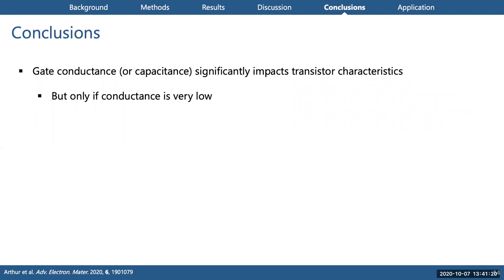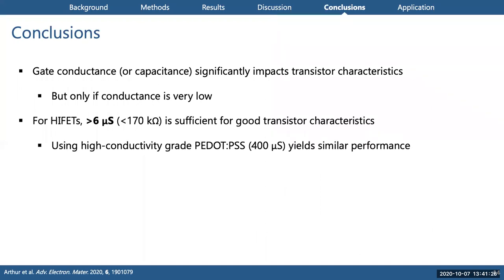This might very well be underlying what we're seeing in our devices with poor gate conductance. So the conclusion we've drawn from this study is that gate conductance, or perhaps capacitance, which would probably correlate in a lot of ways, can significantly impact transistor characteristics due to the reduced effective gate voltage, but only when conductance is quite low. This is important—as we saw, we rapidly approach a plateau as gate conductance increases. For our HIFETs, above around 6 microsiemens is sufficient for good transistor characteristics.